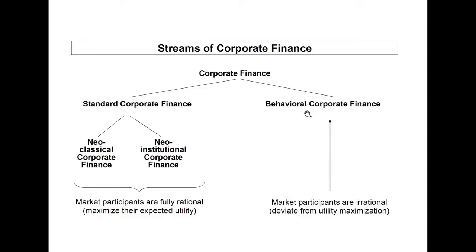The difference between standard corporate finance and behavioral corporate finance can be described easily. In both streams of standard corporate finance, you assume that everybody is rational. This holds both for investors on the capital market, including parties that are supporting them, and for people within the companies. Technically, rationality means that people are maximizing their own expected utility. In contrast to standard corporate finance, in behavioral corporate finance, you allow for irrational behavior. Therefore, people are subject to biases like overconfidence, loss aversion or regret, and they use heuristics like uncritically following the herd.